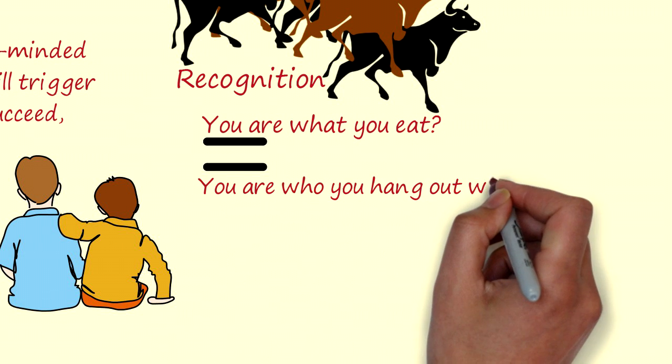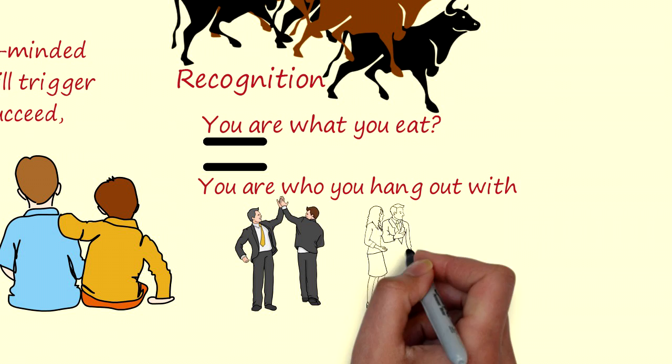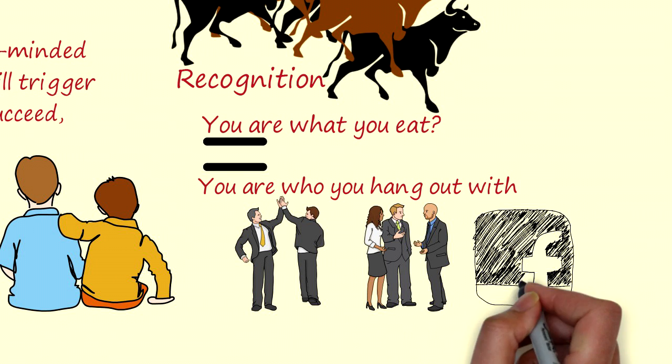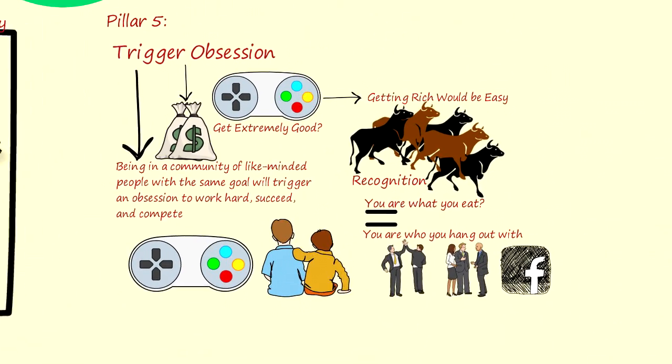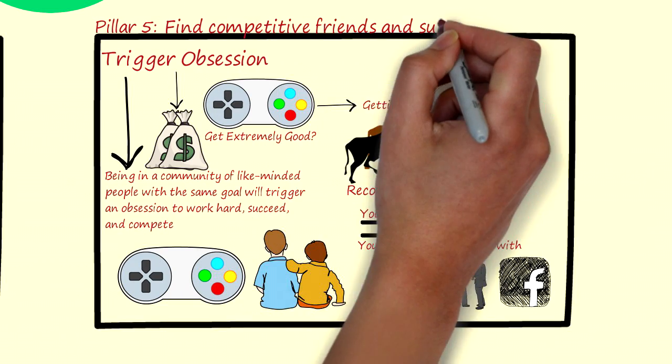Do you know the expression you are what you eat? Well, in this case, it is you are who you hang out with. If you spend most of your time with super competitive people who want to become rich, you are going to develop a strong urge to do the same. Join Facebook groups with entrepreneurs and reach out to people who have the same urge as you to become successful and rich. Therefore, the fifth and last pillar of wealth is find competitive friends and suitable mentors.